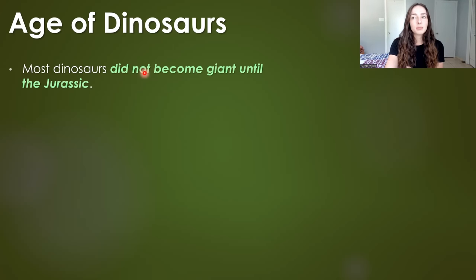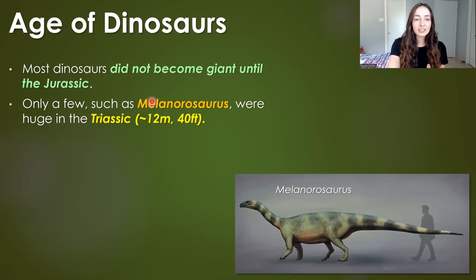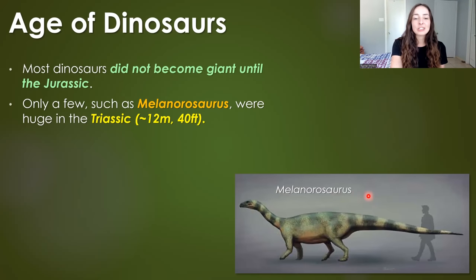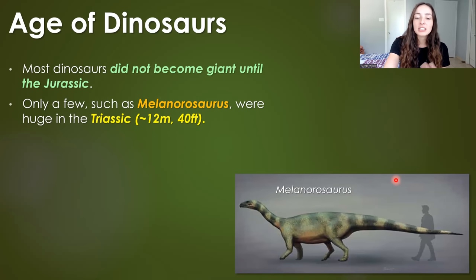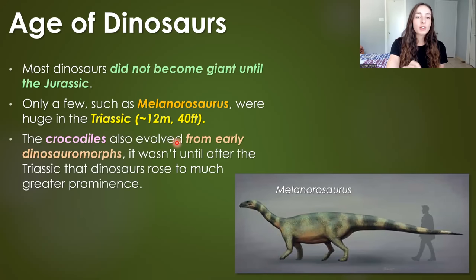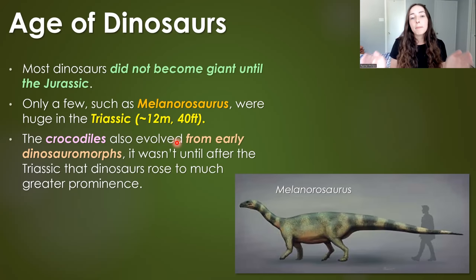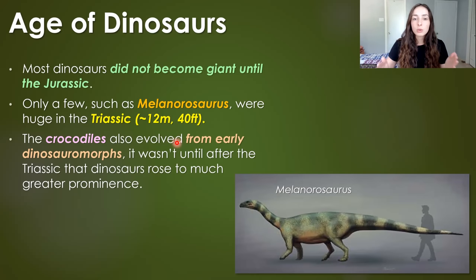It wasn't until the Jurassic that they became pretty much huge, and even then there were still plenty of small dinosaurs. They were very diverse — small, medium, large, everything in between. Only a few got to huge sizes in the Triassic. For example, the Melanorosaurus became quite huge in the Triassic, up to 40 feet or 12 meters. Crocodiles also evolved from early Dinosauromorphs. Dinosauromorphs are the larger clade that includes Dinosauria, but also other branches that led to organisms like crocodiles.